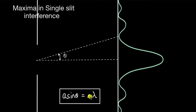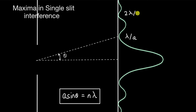The first minima is formed when n = 1. Since θ is a very small angle, we can write θ in place of sin θ, so the angular position of the first minima is λ/a. Similarly, for the second minima, n = 2 and the angular position is 2λ/a. The central maxima is formed when there is no path difference among all the light sources from the single slit, i.e., θ = 0.